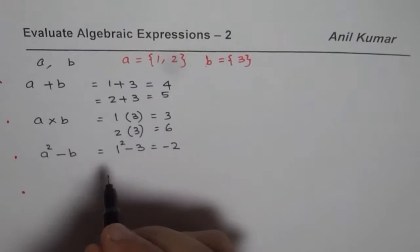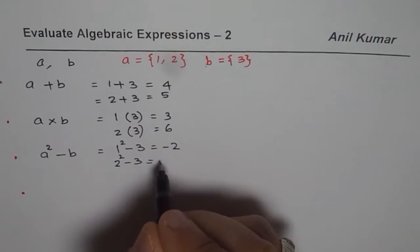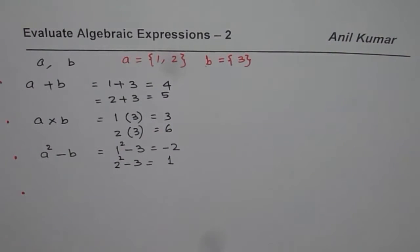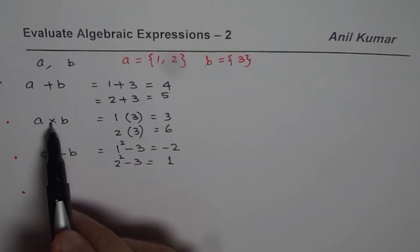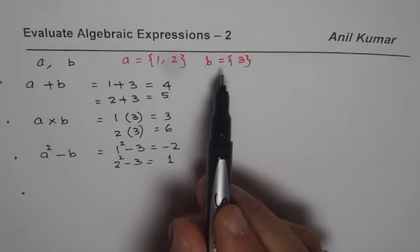The other one could be with 2. So we have 2 square minus 3. 2 square is 4, 4 minus 3 is plus 1. Do you get the idea? So likewise, you can evaluate each algebraic expression for the given values of the variable.